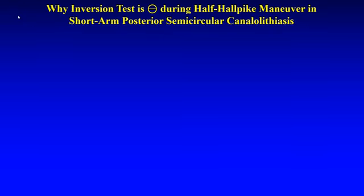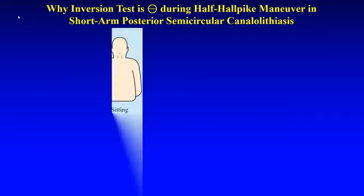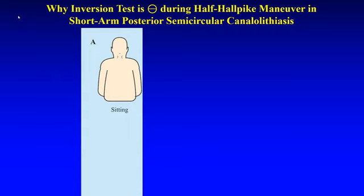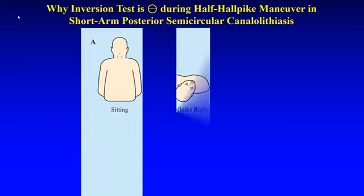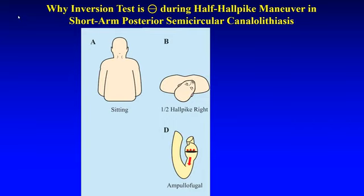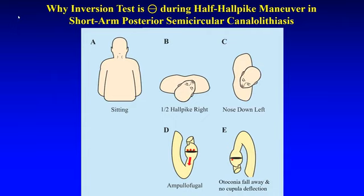So why is the inversion test negative during the half-Alpike maneuver in short posterior arm semicircular canalolithiasis? As the patient is taken to the half-Alpike position to the right, there is an ampullofugal excitatory stimulation of the cupula, causing a prolonged duration ipsi-torsional right torsional upbeating nystagmus. As the nose-down to the left is done — the inversion test — the otoconia fall away, there is no cupular deflection, and there is no nystagmus.